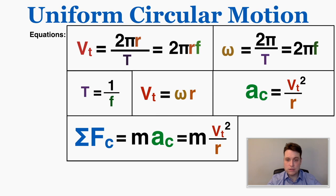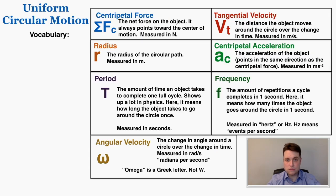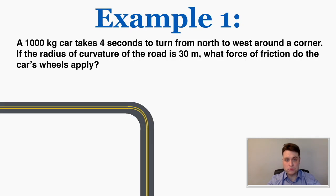So in conclusion, this is all the new vocabulary for the unit — there's a lot, but once you get used to using it each individual idea is pretty straightforward. Now I'll end the video with two examples of circular motion problems. A 1,000 kg car takes four seconds to turn from north to west around a corner. If the radius of curvature of the road is 30 meters, what force of friction do the car's wheels apply?